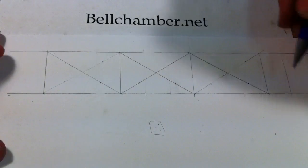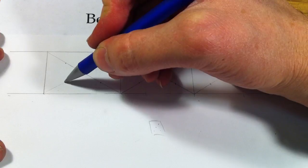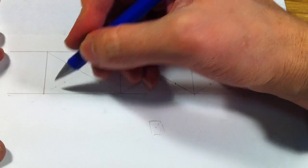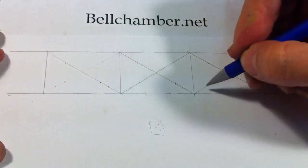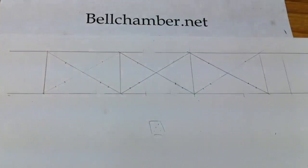Next, I want you to make another dot halfway between this dot and the corner on each one. So, you've got one, two, three, four, five, six.